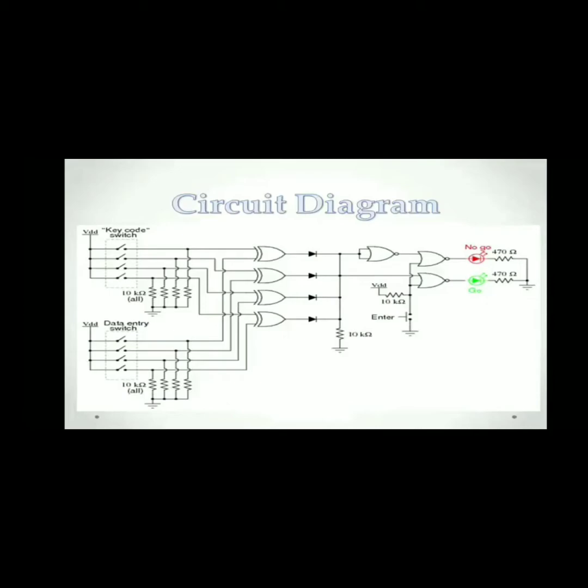Then we shorted the outputs of diodes and connected them with a 10 kilo ohm resistor. Then we take a connection from the shorted line and make an inverter using NOR gate, as shown in the diagram.